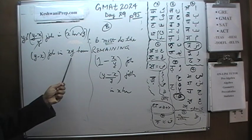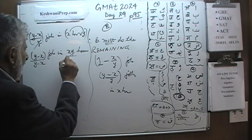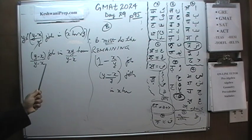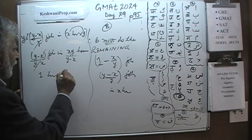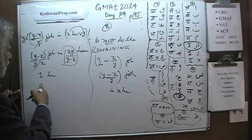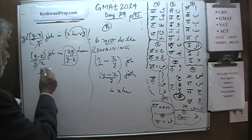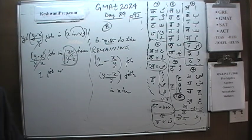If B can do Y minus X jobs in XY hours, then to find the time for one job we divide both sides by Y minus X. That gives us: B can do one job in XY over Y minus X hours. That is our answer — XY over X minus Y from the answer choices. Do you understand? That is all there is.